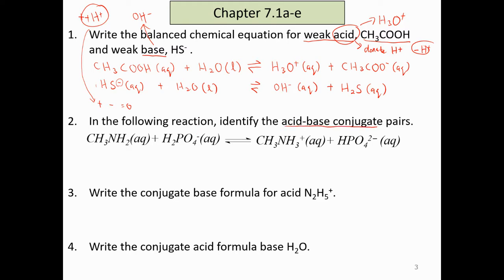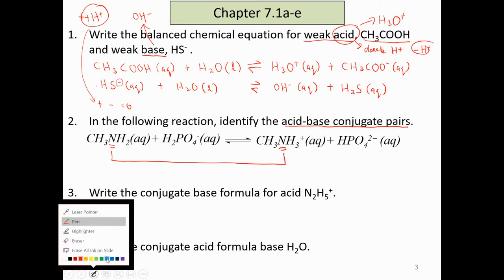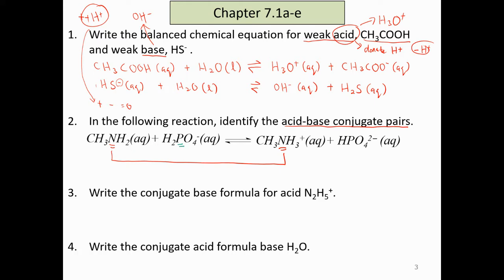Identify the acid-base conjugate pairs. So before that, I will start with pairing them up first. How to pair them up? Other than hydrogen, we look for other elements. For example, I have nitrogen here in the reactant, and then in the product I also have nitrogen. So that I'm sure this is going to be one pair. So if this is one pair, then the one that has P or phosphate will be another pair.